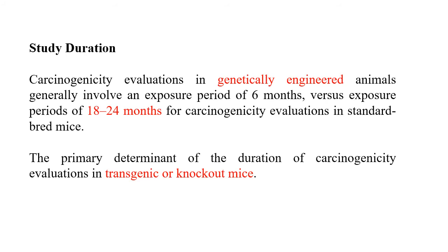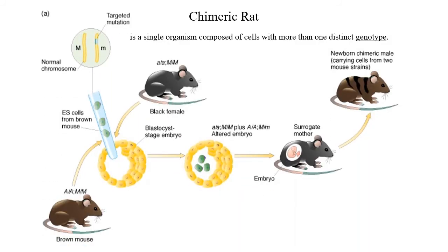Carcinogenicity evaluation in genetically engineered animals generally involves an exposure period of six months, versus 18 to 24 months for standard carcinogenicity evaluations. The primary determinant is duration in transgenic or knockout mice. A chimeric rat can be developed by using a mutated non-functioning gene and a normal chromosome. This mutated gene pair is inoculated into blastocysts taken from brown mice, which are then implanted in the womb of black mice, resulting in offspring with characteristics of both animals.